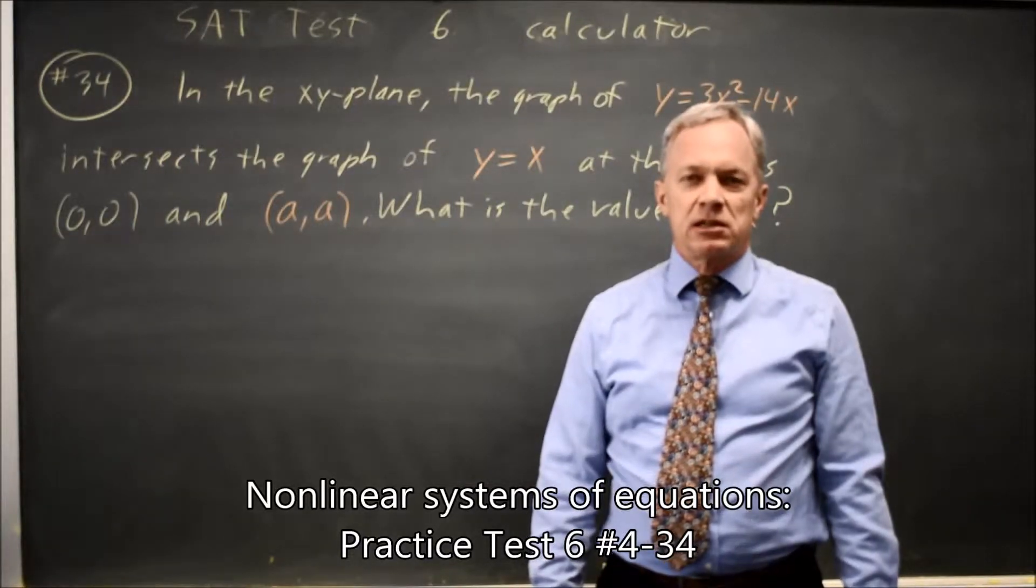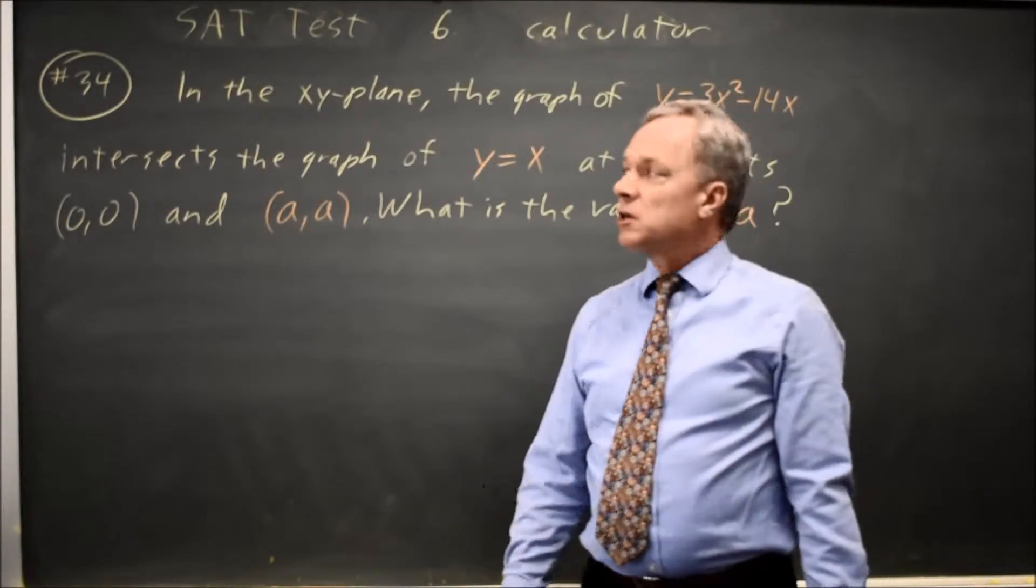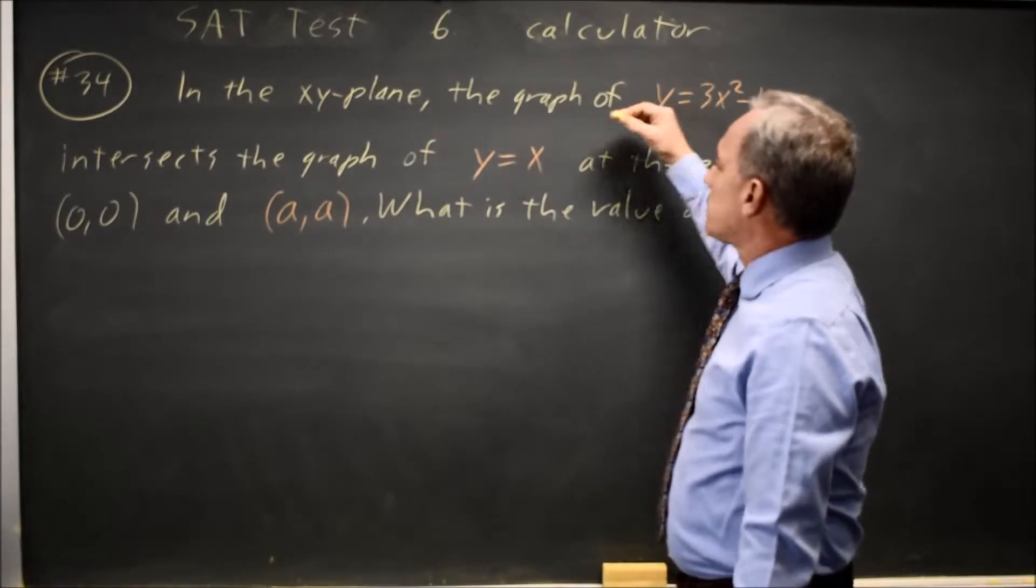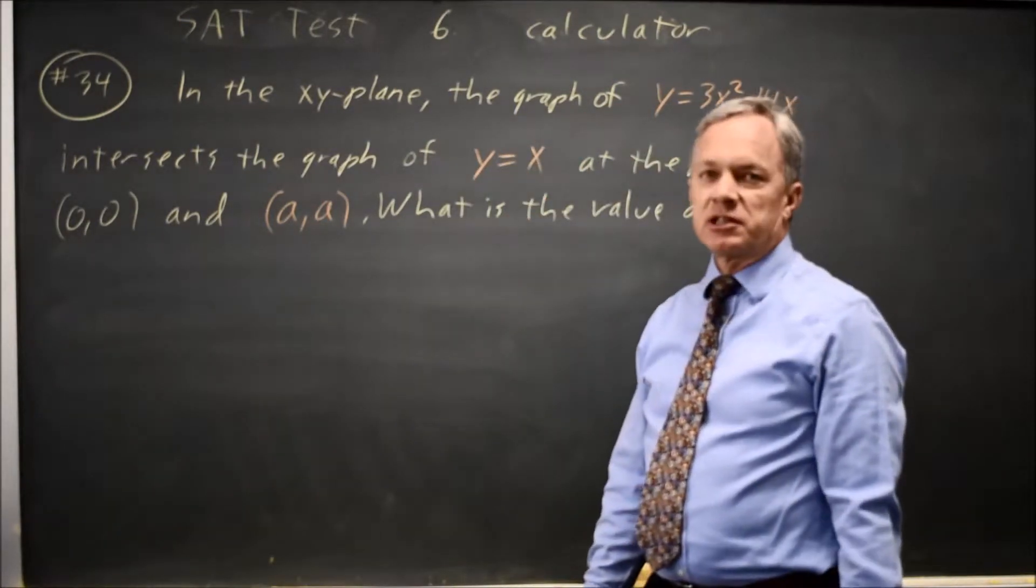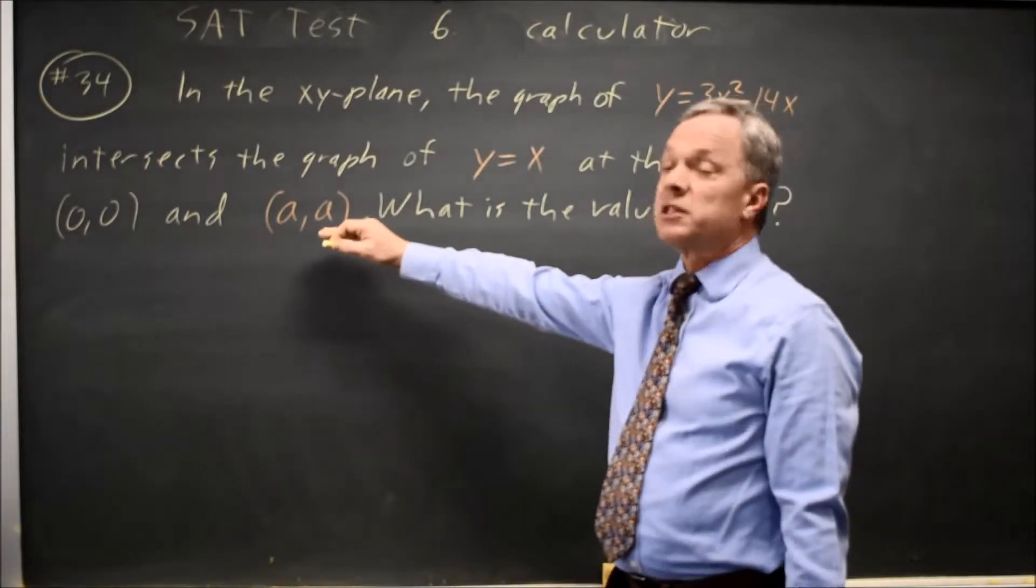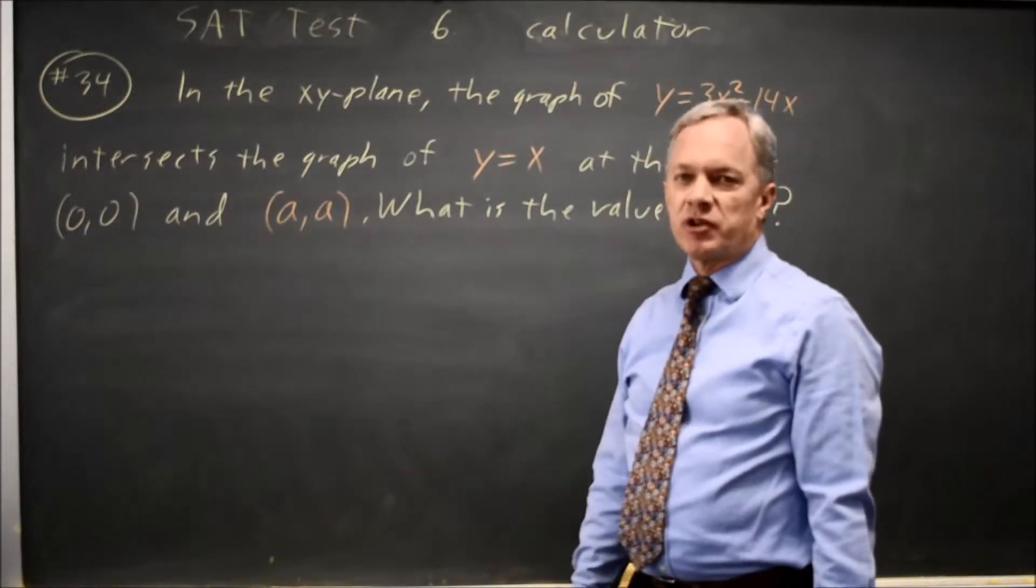This is SAT test 6, calculator question number 34. College Board gives us a quadratic equation and a linear equation and asks about the points of intersection, one of which is (0,0) and the other point is (A,A). They're asking for the value of A.